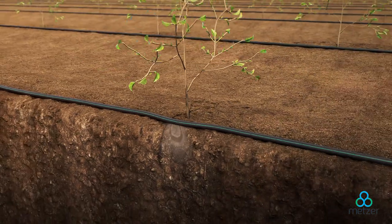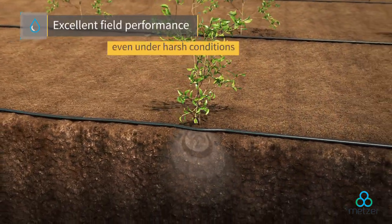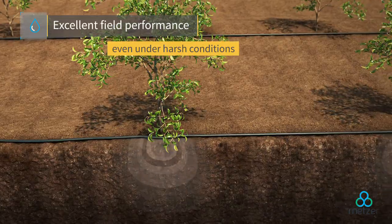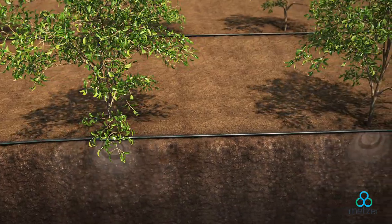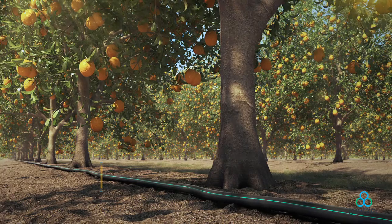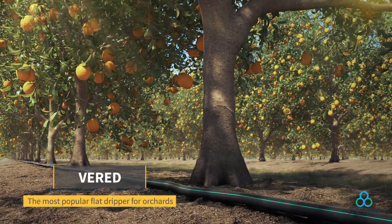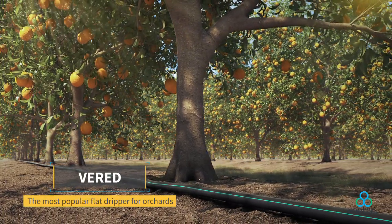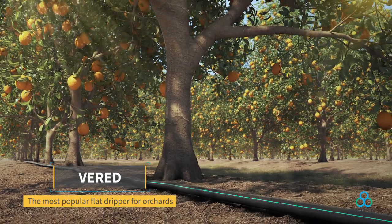With excellent field performance even under the harshest of conditions, it is no surprise that Varid has become the PC Dripper of choice for numerous heavy-duty growers around the world. It is Metzer's number one most popular dripper for orchards, because Varid simply gets the job done.